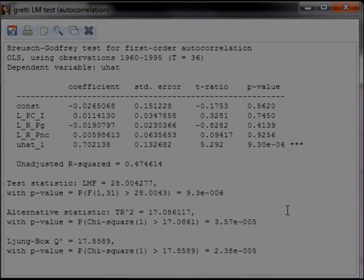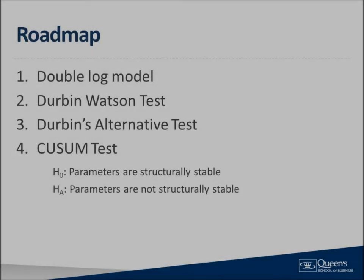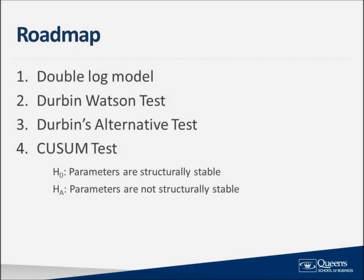Now let's move on to the third specification test. The third specification test is a QSUM test, and it tests for structural stability of the parameters. We are going to use the graph to perform the QSUM test. If the test crosses the 95% confidence band even once, the coefficients are not structurally stable. If the test does cross the 95% confidence band, all we can say is that there is a structural change at some point up to and including that time point. You may want to use the sequential Chow test to help you pinpoint the break.